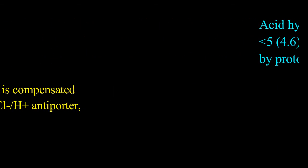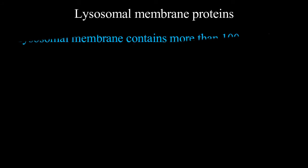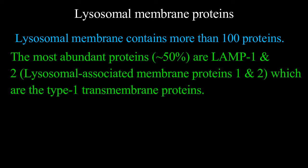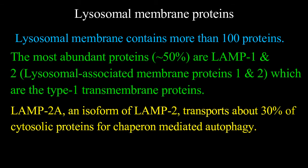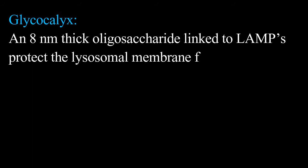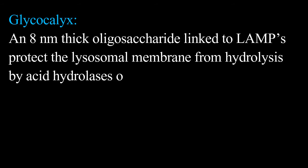The imbalance in charges across the membrane is compensated by unspecified cation channels and lysosomal chloride H-plus antiporter CIC-7 and OSTM-1. Lysosomal membrane contains more than 100 proteins. The most abundant proteins, constituting about 50%, are LAMP-1 and LAMP-2, that is lysosomal associated membrane proteins 1 and 2, which are type 1 transmembrane proteins. LAMP-2A, an isoform of LAMP-2, transports about 30% of cytosolic proteins for chaperone-mediated autophagy. Glycocalyx, an 8nm thick oligosaccharide linked to LAMPs, protects the lysosomal membrane from hydrolysis by acid hydrolases.